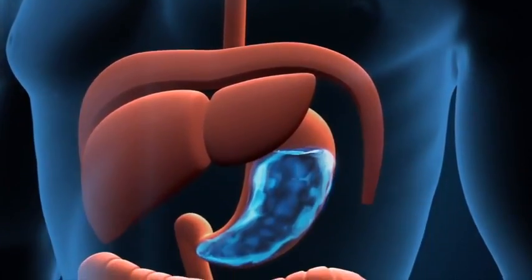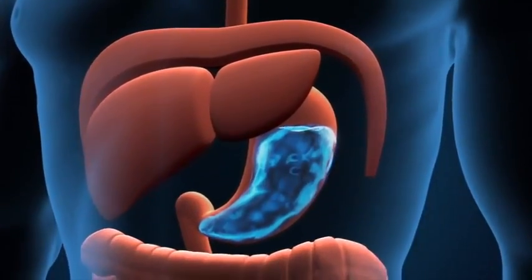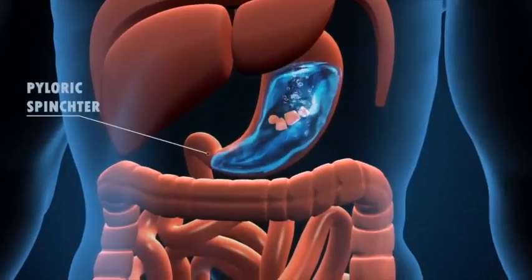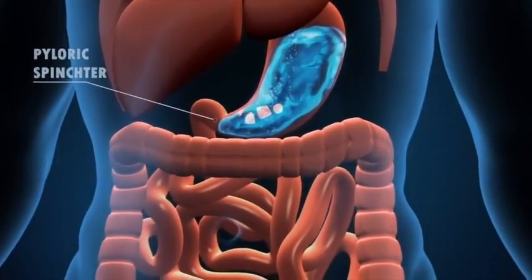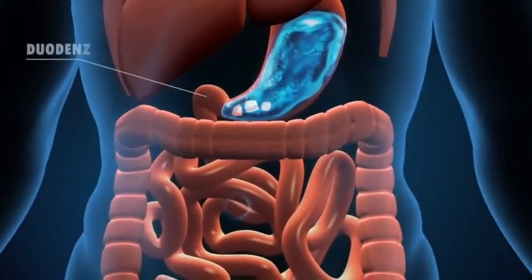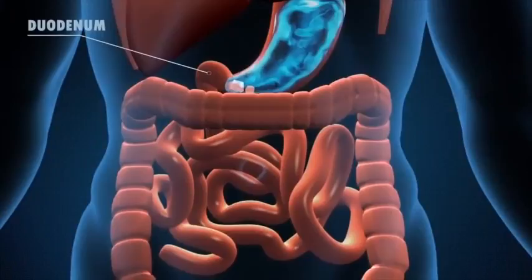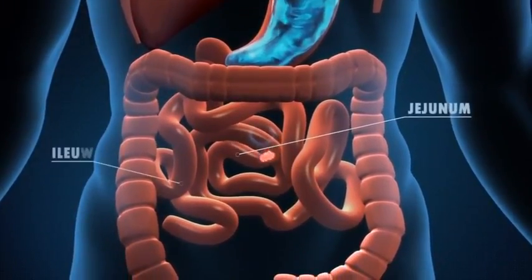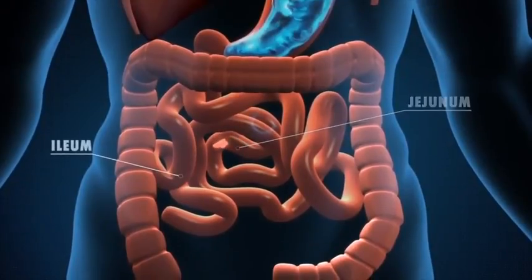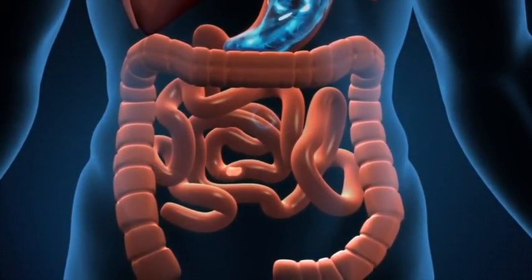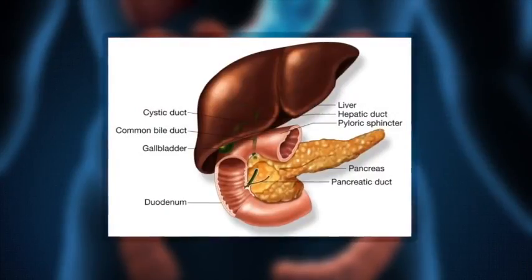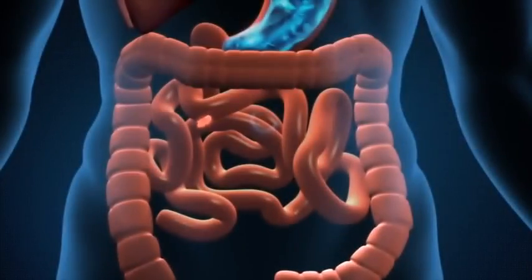The hydrochloric acid present in the stomach converts the food into chyme. The chyme enters a part of the small intestine known as the duodenum. Bile helps in breaking down fats and pancreatic juice breaks down other food particles. Most of the nutrients from the food are absorbed in a part of the small intestine known as the jejunum.